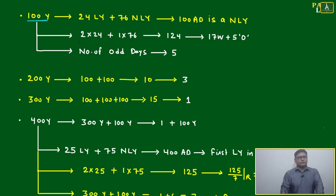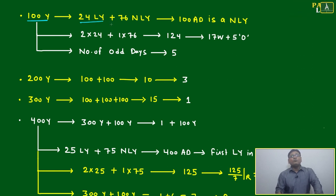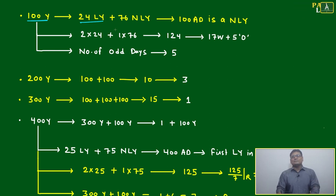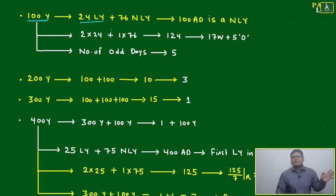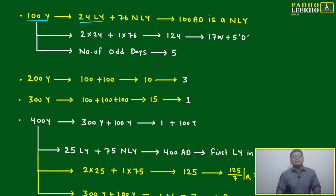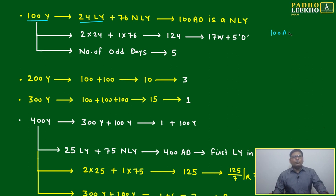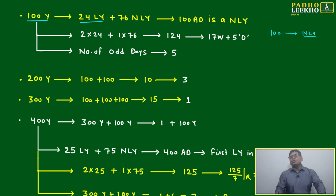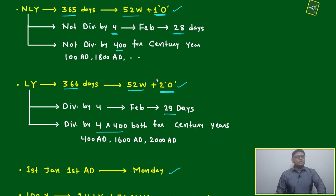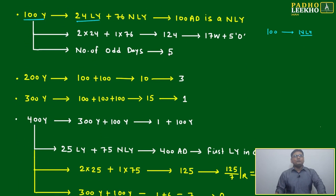In 100 years, how many leap years are there? 24 leap years. We use divisibility by 4: 100 ÷ 4 = 25 multiples of 4, but the last multiple is 100 itself, which is not a leap year because it is a century year and not divisible by 400. So we take 24 leap years, and the remaining 76 are non-leap years.